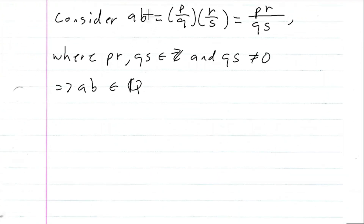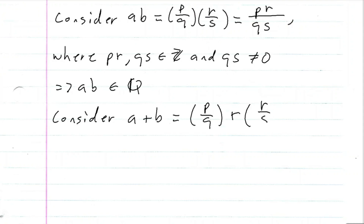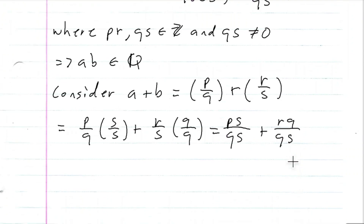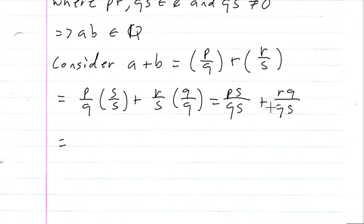Now we're going to do a similar argument for A plus B. So let's consider A plus B. A was P over Q, so this is P over Q plus R over S. We have to find a common denominator, so this will be P over Q times S over S, plus R over S times Q over Q. This gives us PS over QS plus RQ over QS.